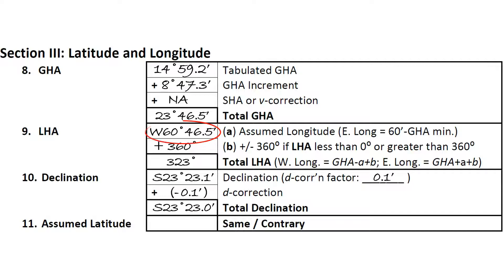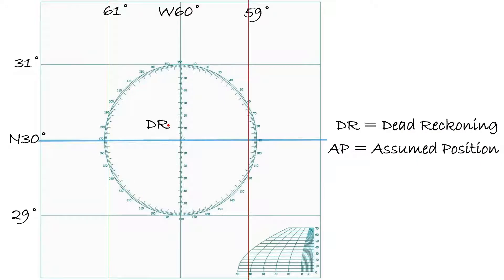Earlier, when completing LHA on the sight reduction form, we had an assumed longitude of 60 degrees west and 46.5 arc minutes. So we wished to pick an assumed latitude at the nearest whole degree, which we see is 30 degrees north. We marked the assumed position on our chart.